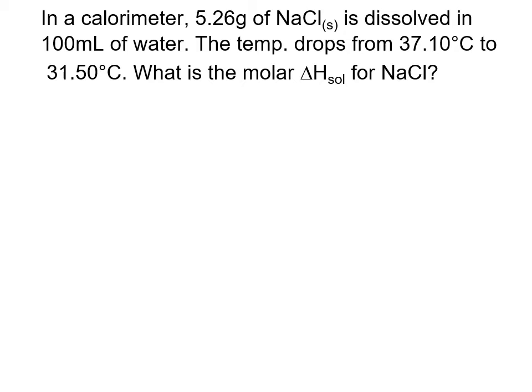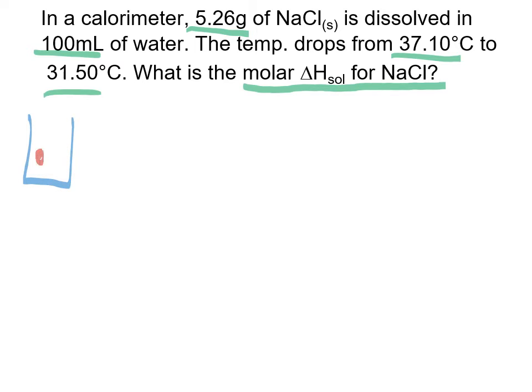Let's try this question: in a calorimeter, 5.26 grams of sodium chloride is dissolved into 100 milliliters of water. The temperature drops from 37.1°C to 31.5°C. We want the molar heat of solution for the dissolving of sodium chloride. We don't need a full mole — we can figure out the energy for any amount and convert. The temperature is dropping, meaning the water is losing energy as the crystal dissolves.